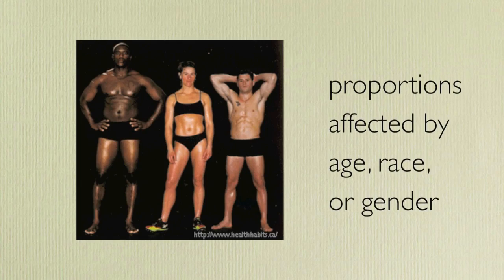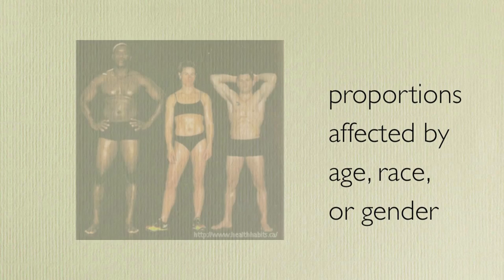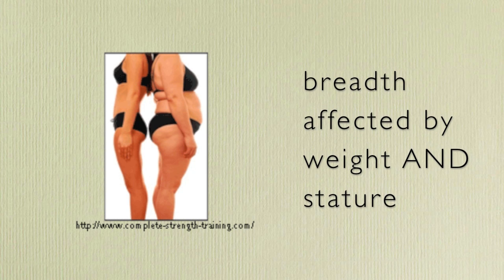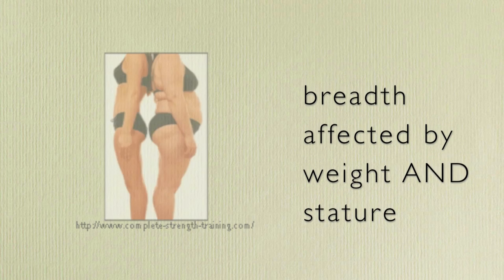Some other criticisms about the Drillis and Cantini constants is there is no formal definition of the points of measurement. Furthermore, there is no data on the population that was used to determine the proportionality constants. This is important, as some proportions can be affected by age, race, or gender. An additional weakness is the assumption that all proportions can be estimated by stature alone, as measures of breadth are affected by a person's weight as well as their stature.